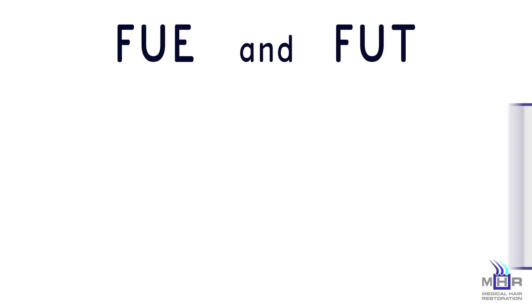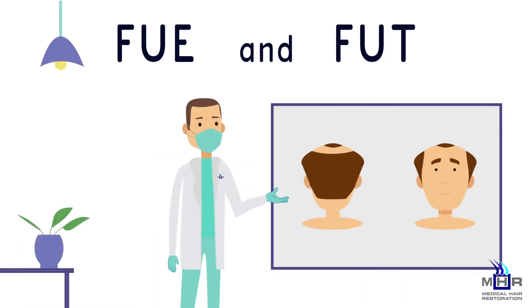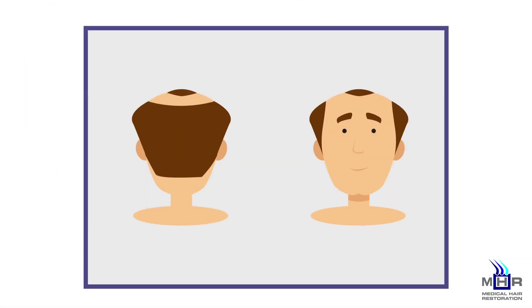FUE and FUT are both hair transplant techniques that use similar methods where hair grafts are extracted from the donor region and transplanted in the recipient sites where the balding occurs.